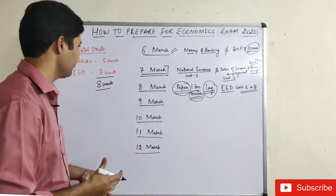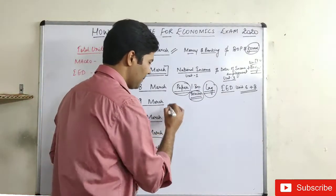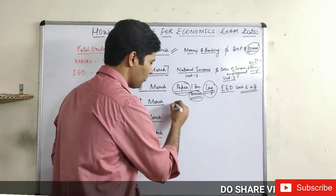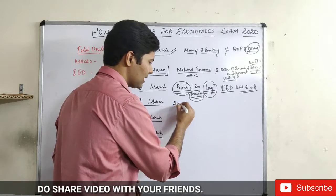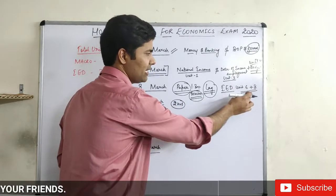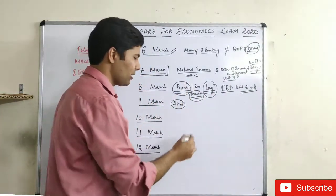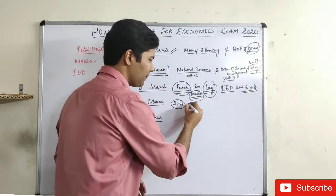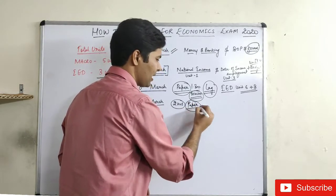The unit that remains is basically unit number 7. I would say that once you've prepared whatever you have, do almost a 2-hour paper that includes questions from IED units 6 and 7. Make sure to do at least one sample paper at this point — if you can do two, that's your choice.